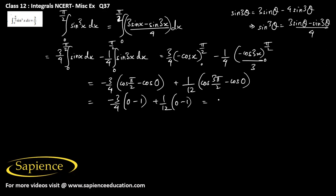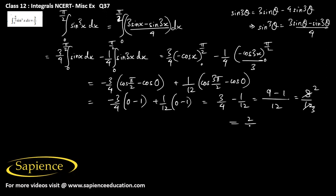So we get minus (3/4) times (0 minus 1), plus (1/12) times (0 minus 1). This simplifies to (3/4) minus (1/12). The LCM of 4 and 12 is 12, giving us (9 minus 1)/12 = 8/12, which simplifies to 2/3. So the final answer is 2/3.